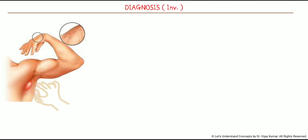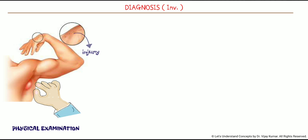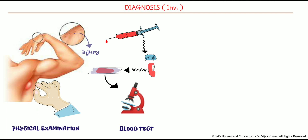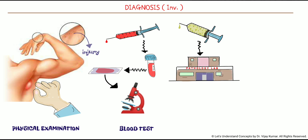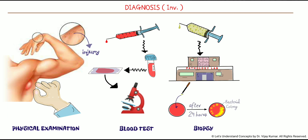Diagnosis. A doctor typically diagnoses lymph node inflammation through a physical examination, which includes feeling your lymph nodes and looking for signs of injury or infection around any swollen lymph nodes. Blood tests to look for infection — often bacteria are found in the bloodstream. Biopsy, that means taking a sample of tissue or fluid from the lymph node. The sample is sent to a pathologist who will test it and interpret lab results. He will place the sample into a culture to see what type of germs grow.